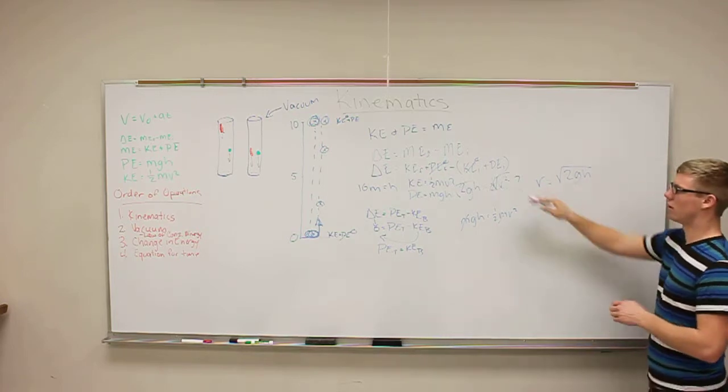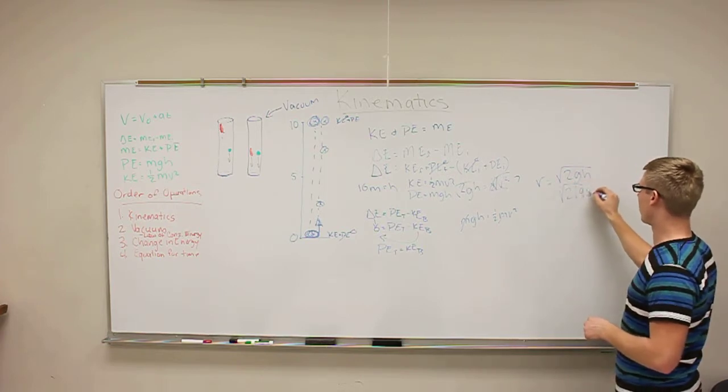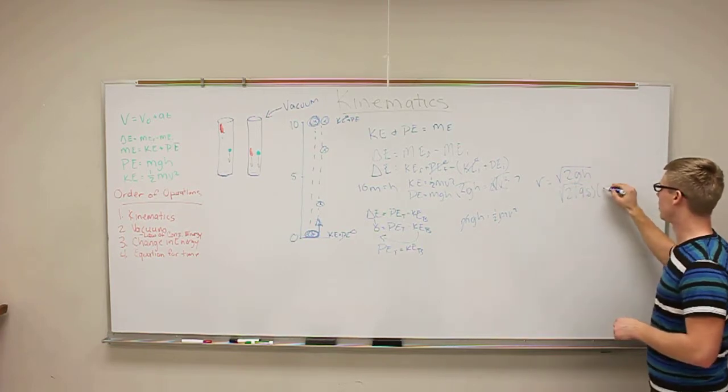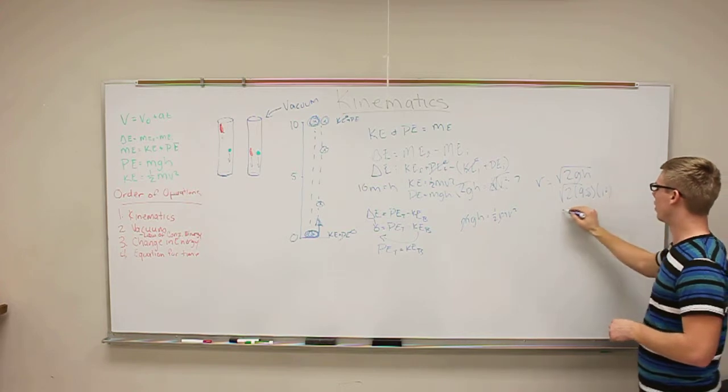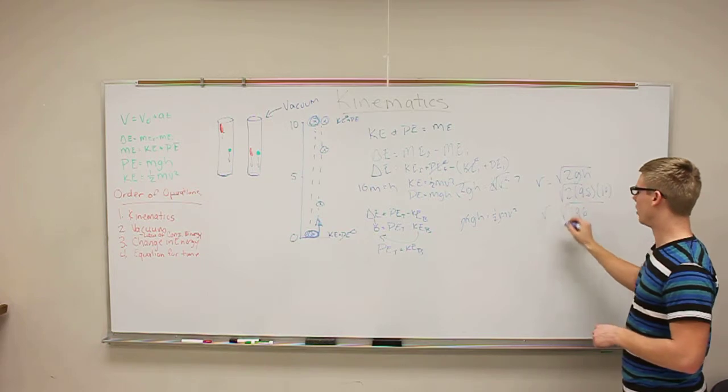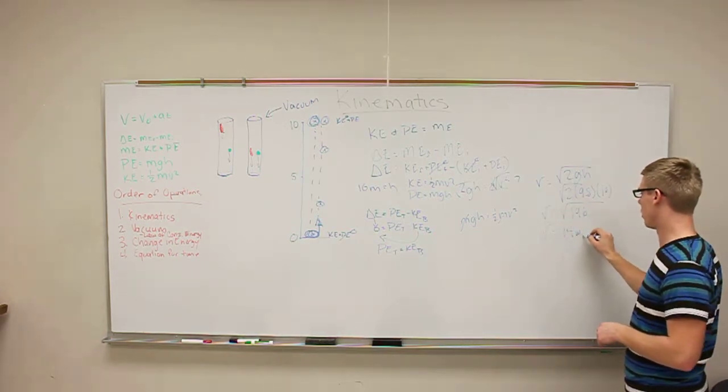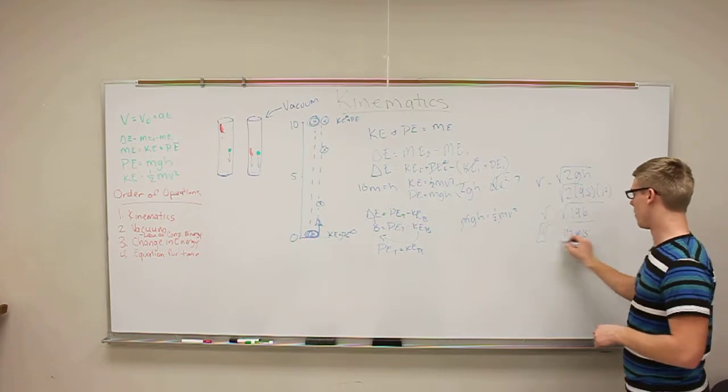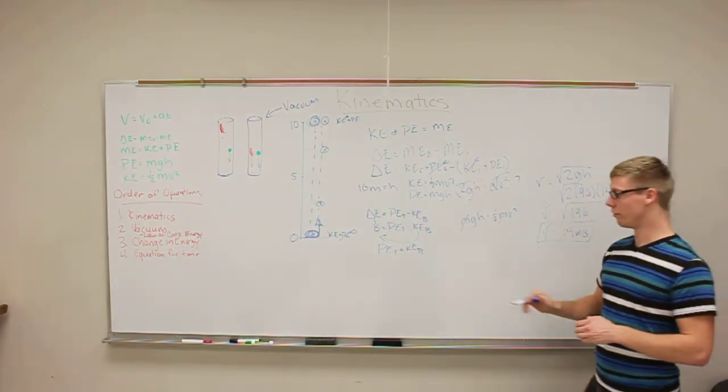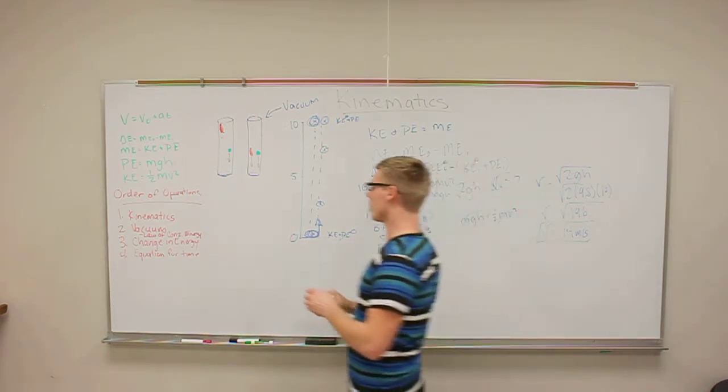So, if you want to plug in all the numbers, we have the square root of two times gravity, which is 9.8, and then the height, which is 10 meters. This equals 196 for v, and then square root of that, which would be 14 meters per second. That is our final velocity right before the ball hits the ground, which is awesome.